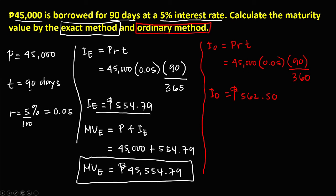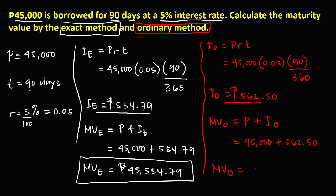Now we can find the maturity value by the ordinary method. The maturity value equals the principal plus the ordinary interest: 45,000 plus 562.50. Therefore, the maturity value by the ordinary method is 45,562.50 pesos.